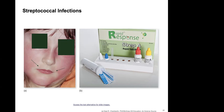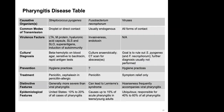Getting results quickly is important: if a child has strep throat, you want to treat with antibiotics, because the longer you wait, the worse it gets. Here is the table summarizing the different types of pharyngitis.